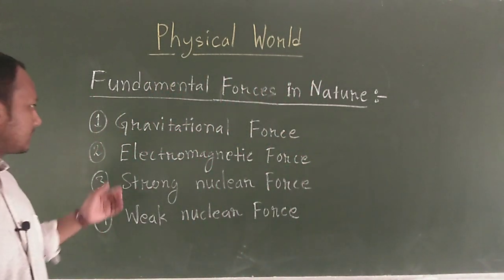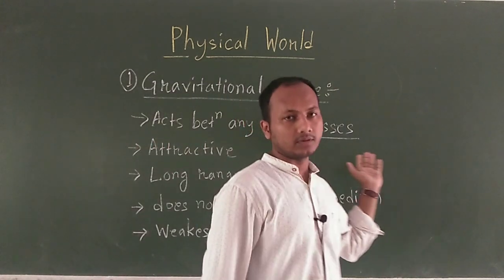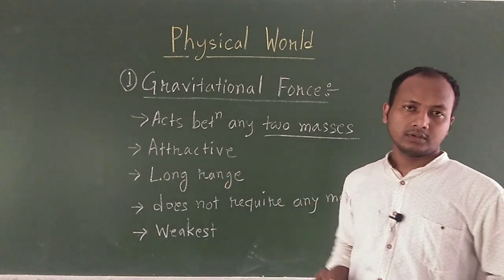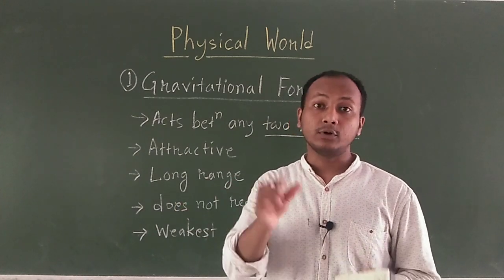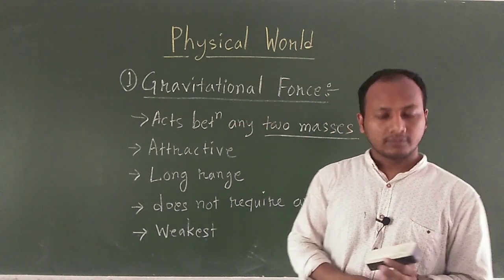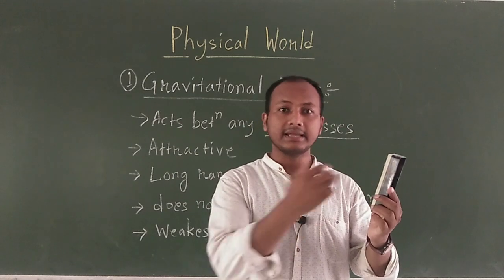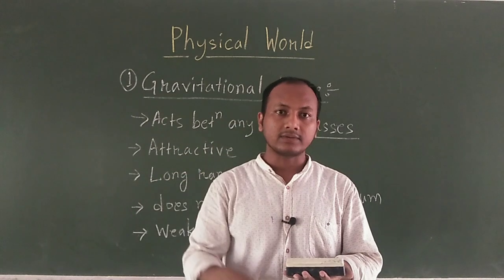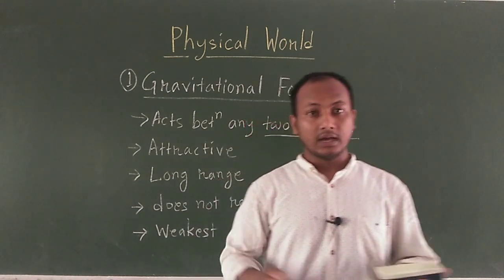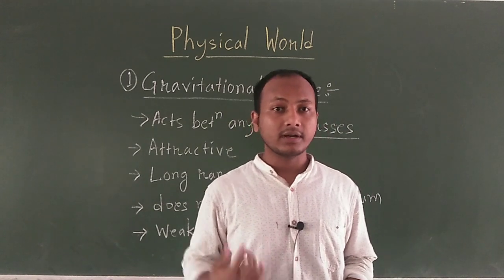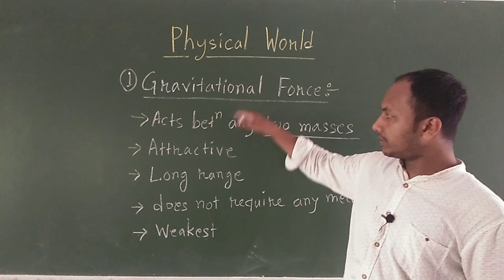First of all I will explain what is gravitational force. Gravitational force acts between any two masses of the universe, and it is always an attractive force. For example, this duster has some mass, I also have some mass, so there is a gravitational force between this duster and me. If I release this, it will go towards the surface of the earth because of the gravitational force between the earth and the duster. The third point is that gravitational force is a long range force.